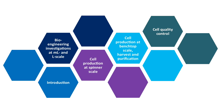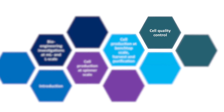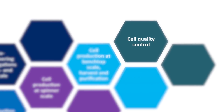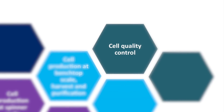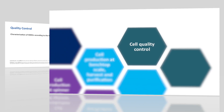This video is part of the e-learning series on expansion of mesenchymal stem cells in stirred single-use bioreactors — specifically cells derived from human adipose tissue, generally referred to as MSCs. In this section, we focus on quality control of expanded HMSCs in accordance with the ISCT and the IFATS position paper.